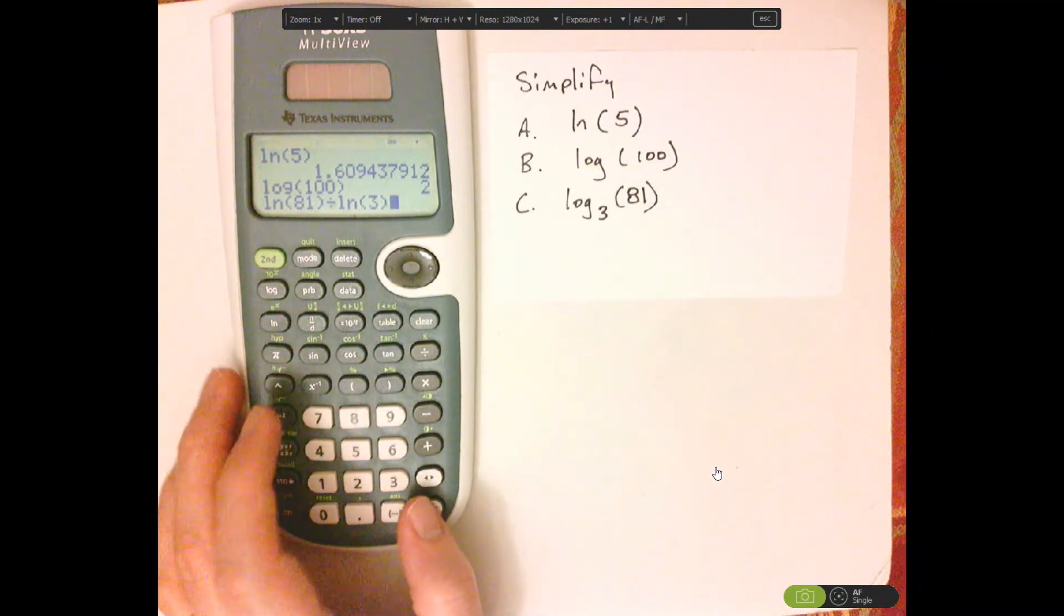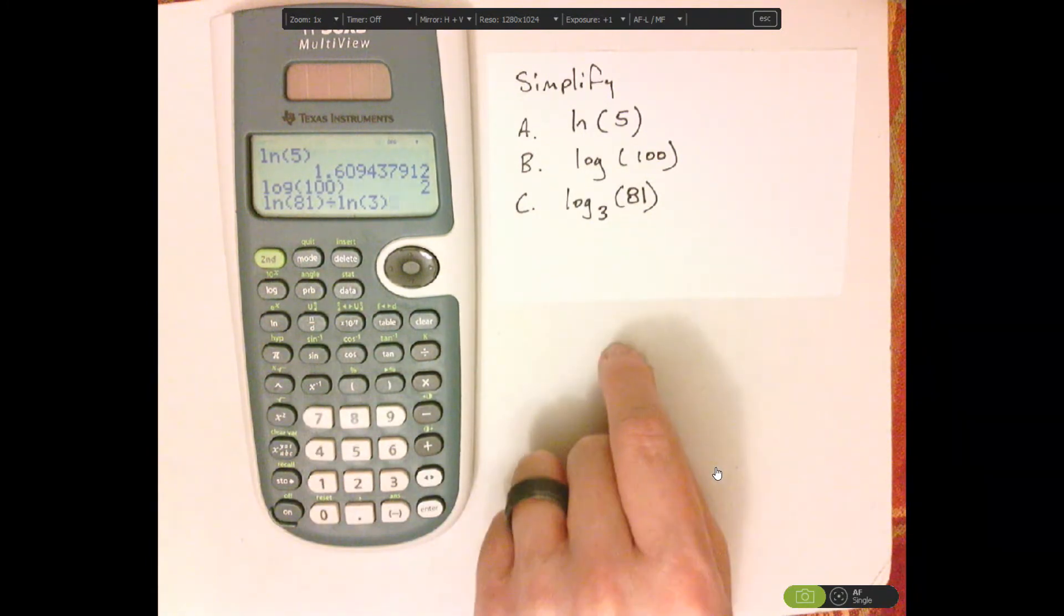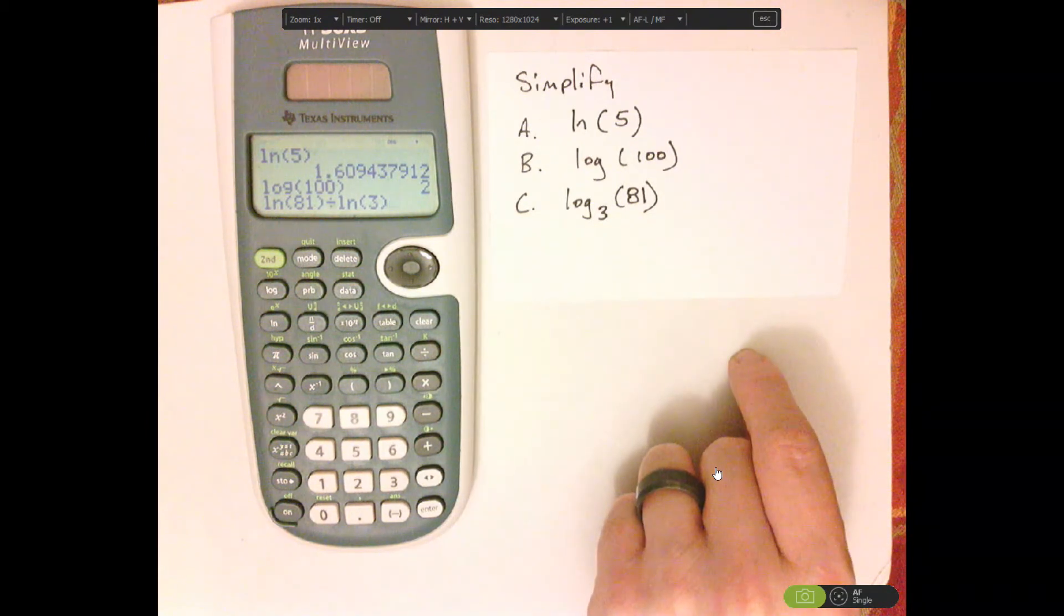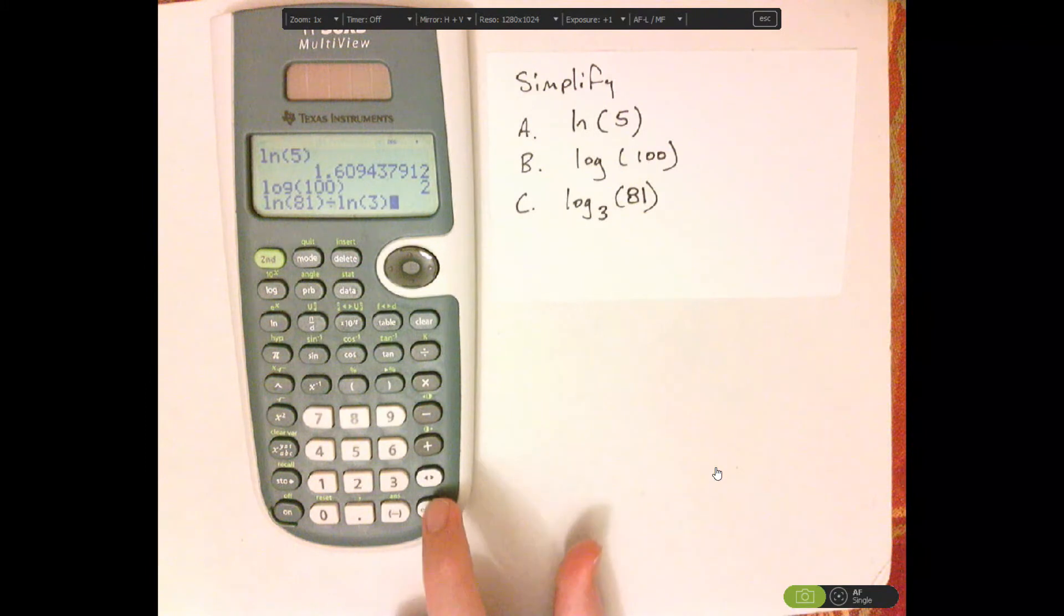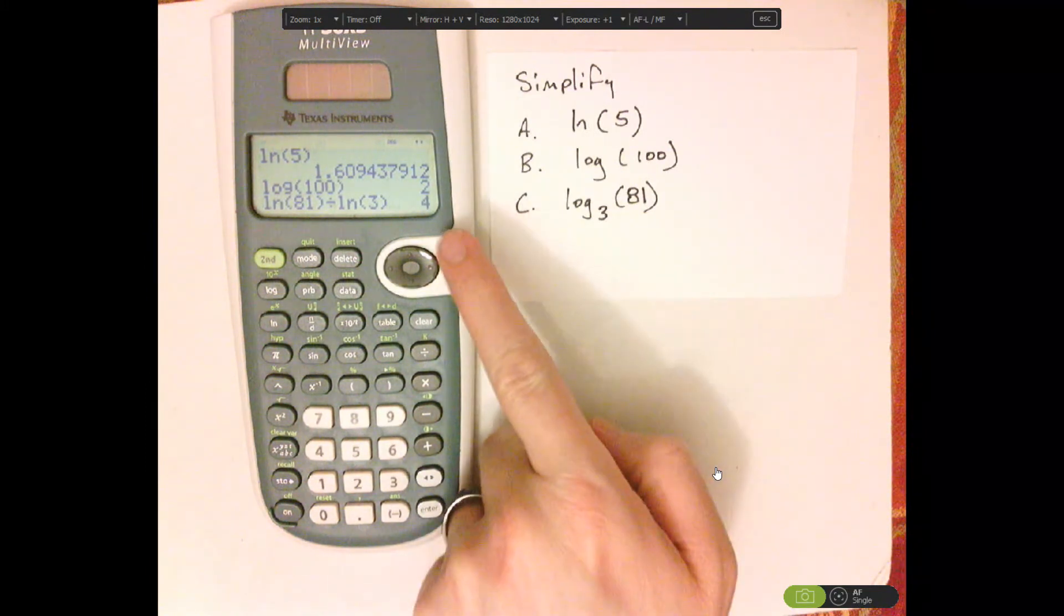Close parentheses. And I should get 4, because 3 raised to what power will give me 81? 4. 3 to the 4th power equals 81. And notice it did that.